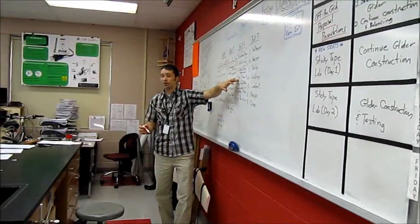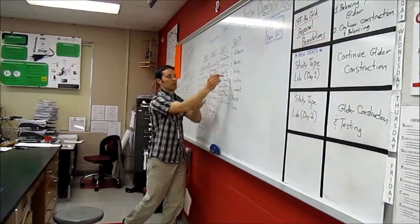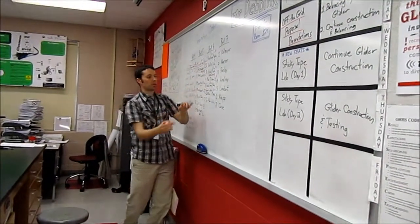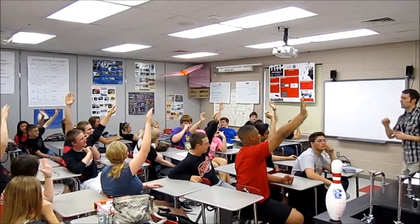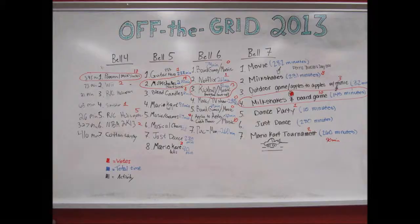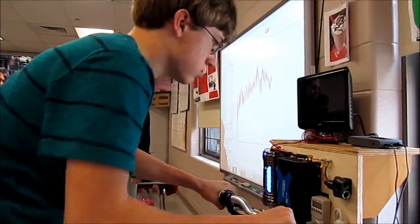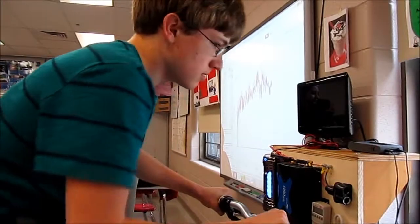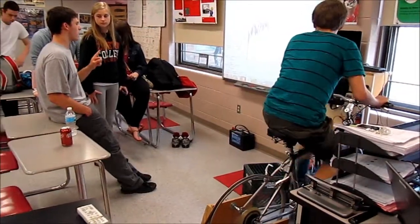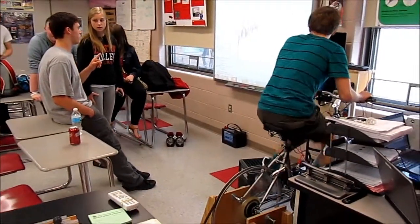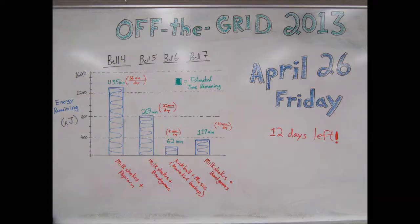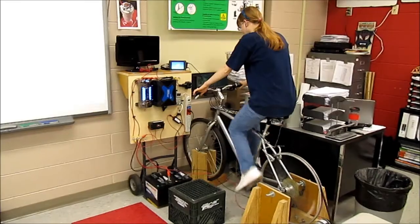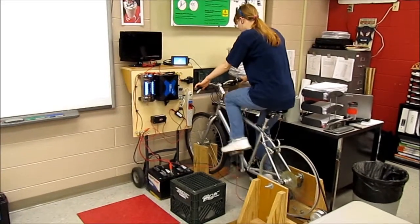After the proposed activities are presented, each class votes for their favorite. The winning proposal then becomes that class's off-the-grid day activity. Now it's up to the students to come in before and after school to store the needed amount of energy in the batteries.